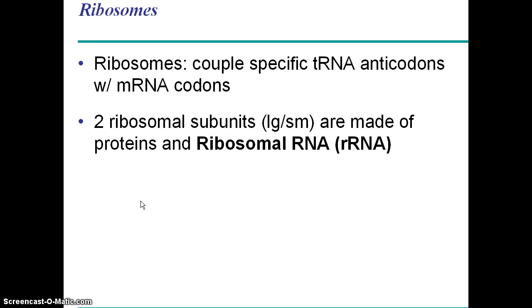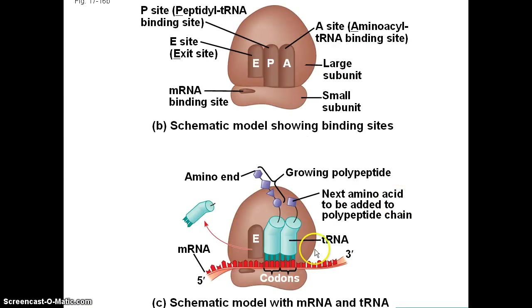Now the ribosomes themselves. Ribosomes are made of two parts: a large and small subunit, and they're predominantly ribosomal RNA or rRNA. So a ribosome is some protein and this specific RNA that gets created. The job of the ribosome is to bring in the messenger RNA and the tRNA. They dock on the small subunit. The large subunit then has three sites: the A site, P site, and E site.